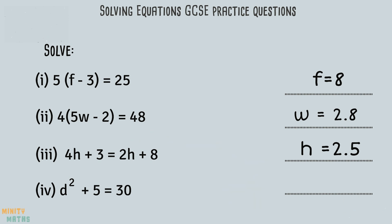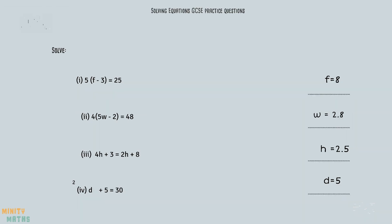The final question involves a power. But firstly we should get rid of the 5 by taking away 5 from both sides of the equation. We are then left with the equation d squared equals 25. We then take the square root of both sides to find out what d equals. Thanks for watching, and good luck with your exams.